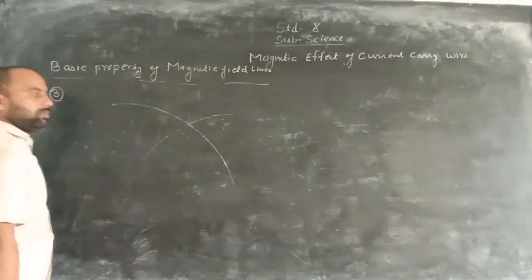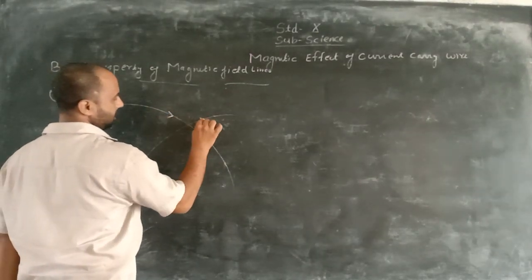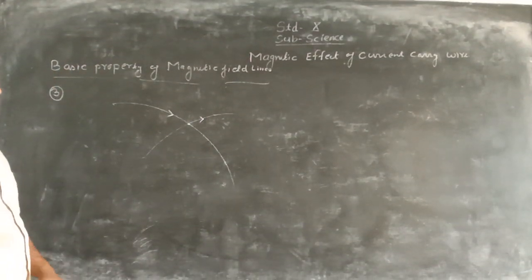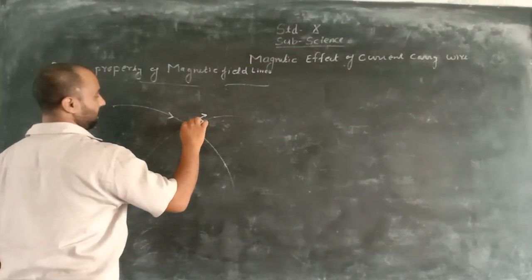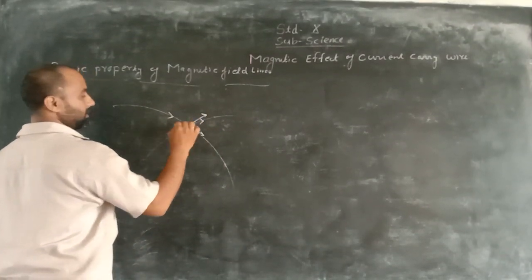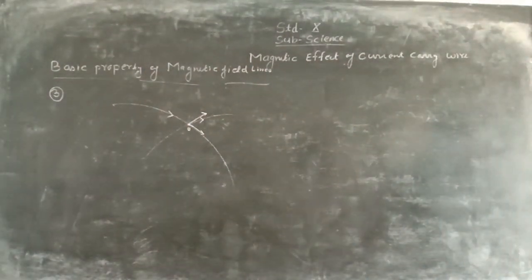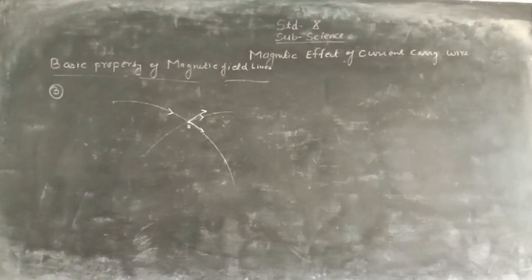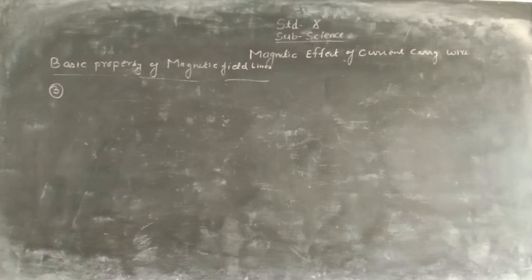These are the two magnetic field lines. Suppose we have to cut these magnetic field lines at a point — at the final intersection, two tangents are drawn here. And the direction of the magnetic field can be seen at a single point. The simple sense is that two magnetic field lines cannot intercept each other. The third basic property is that two magnetic field lines do not intersect each other.